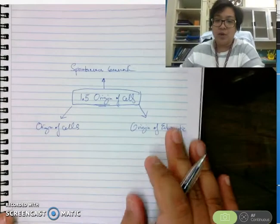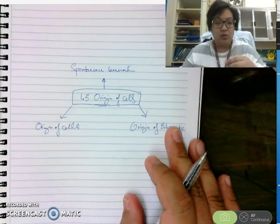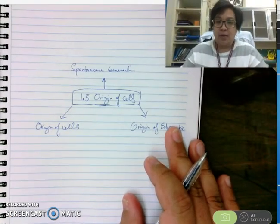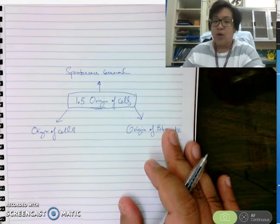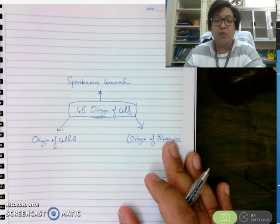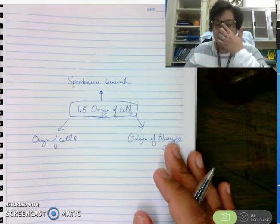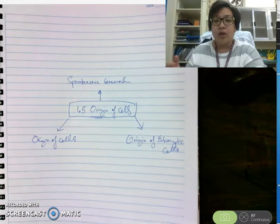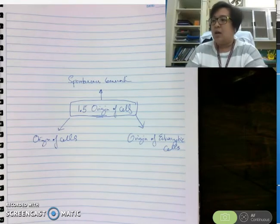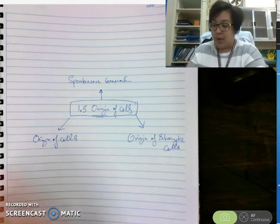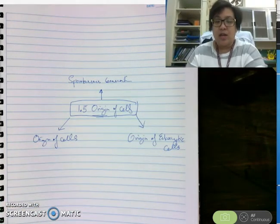Let's start with spontaneous generation. From the word itself, spontaneous means to instantly happen — it just happened automatically. Back in time, the scientific world believed that living cells or living organisms spontaneously appeared out of nothing, and there were several experiments done on this.